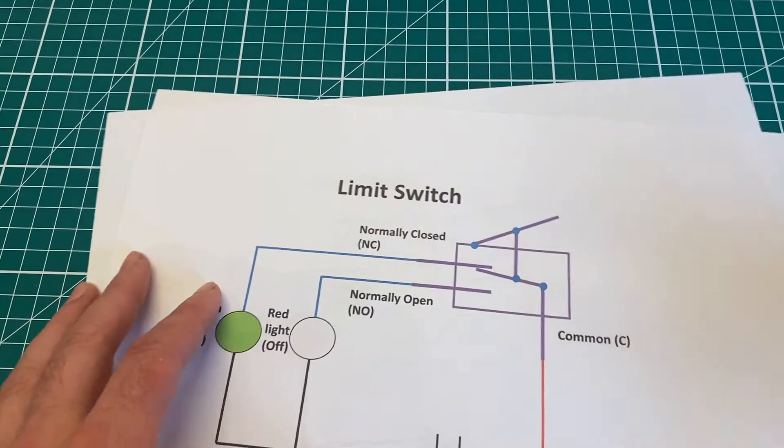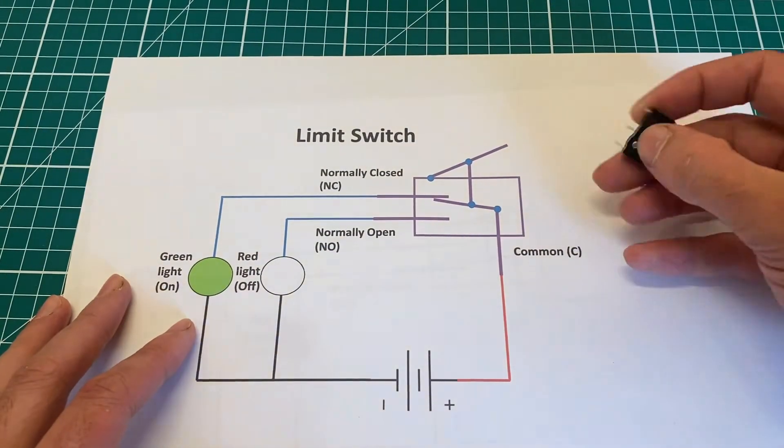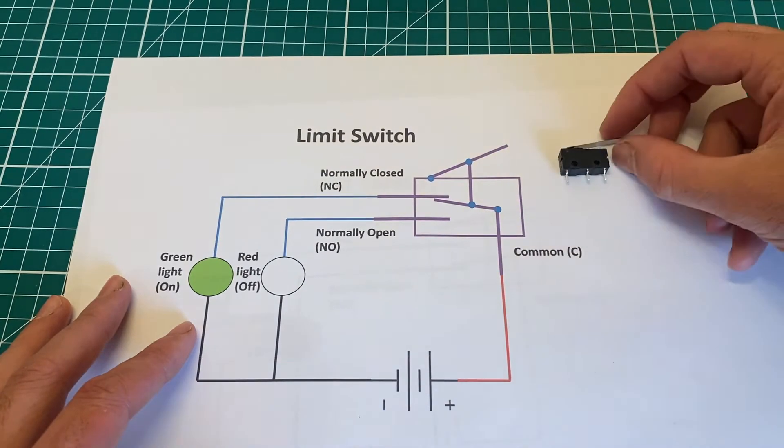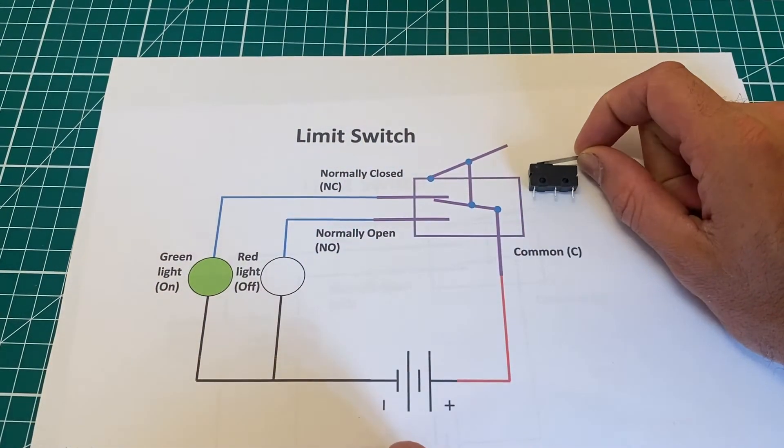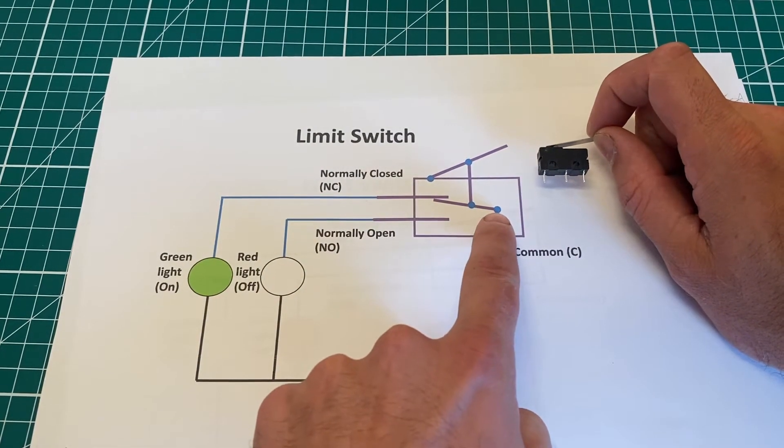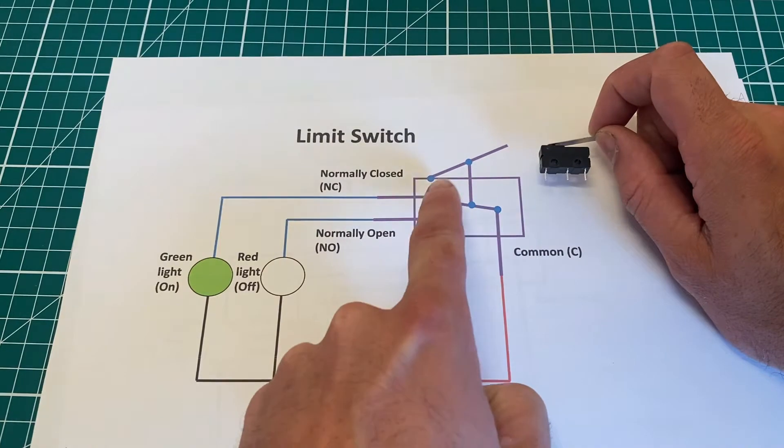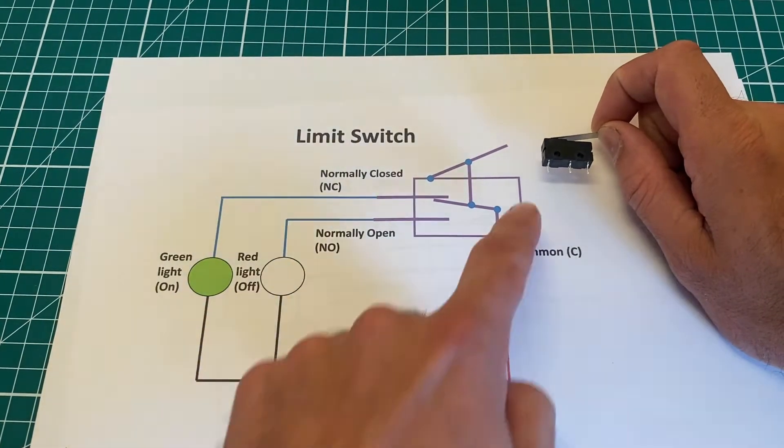So on this page here, you can basically see a side section or cross-section of a limit switch itself. So everything in purple here you can consider your limit switch, and I want you to look at each of these blue circles as pivoting points for different elements of the limit switch itself.